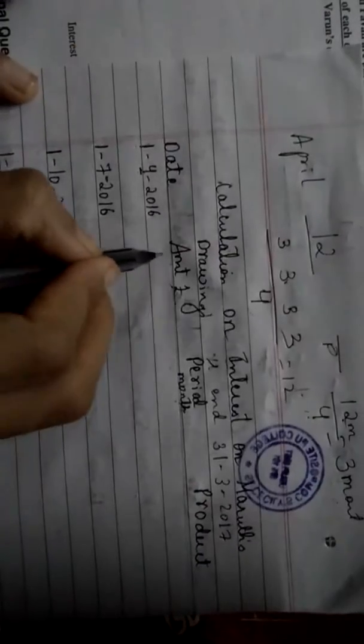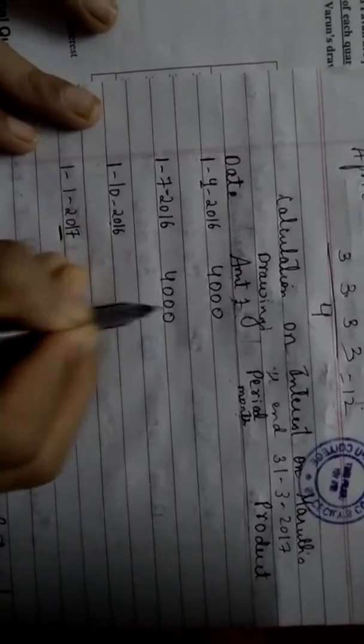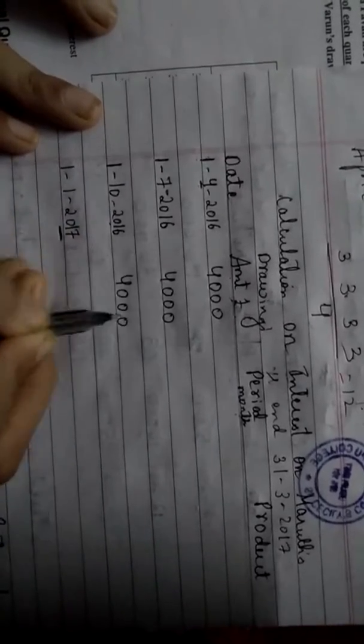Now amount - what you'll write? Amount is given directly. They have told quarterly four thousand rupees. Write four thousand. Every once in three months, four thousand withdrawn. Yes, once in three months, every three months once, he has withdrawn four thousand rupees.